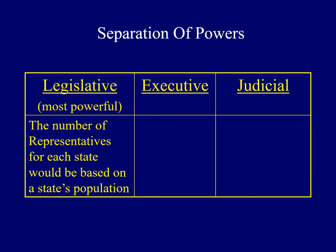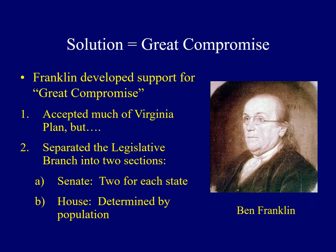The success of the Constitutional Convention was very much threatened. It was actually up to the oldest delegate, Benjamin Franklin, who — once cooler heads prevailed — was able to get both sides to agree to a compromise. This compromise, named the Great Compromise, accepted much of the Virginia Plan, but when it came to determining representation in the legislative branch, Franklin argued it should be divided into two units. One chamber would be the Senate, where each state would have two members. Another chamber would be the House, where the number of members would be determined by each state's population.